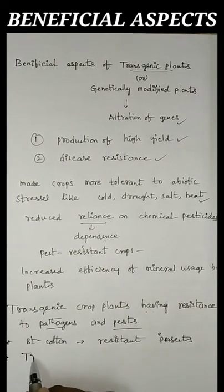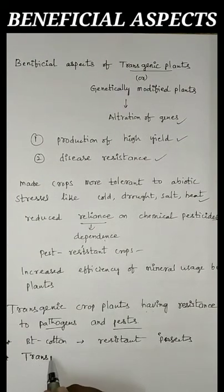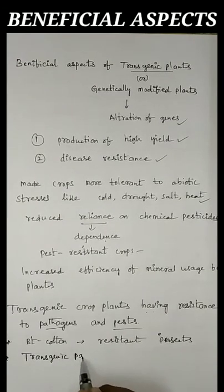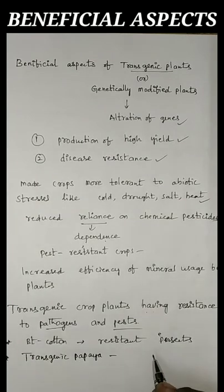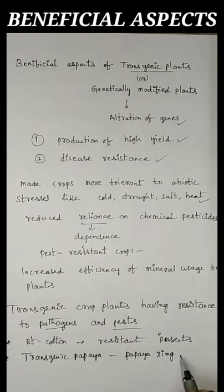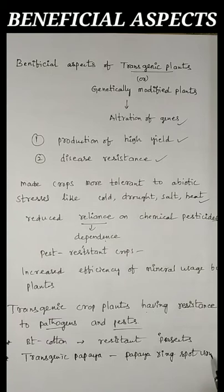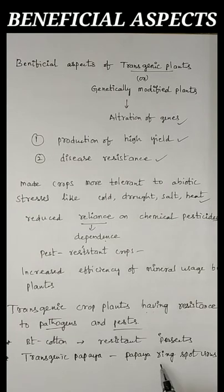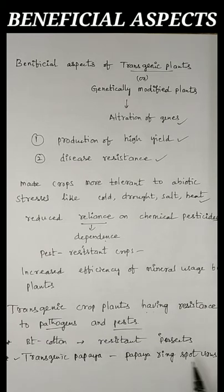Another example is transgenic papaya. This transgenic papaya is resistant against papaya ringspot virus. Normal papaya plant may be attacked by papaya ringspot virus, whereas this transgenic papaya is resistant against it.